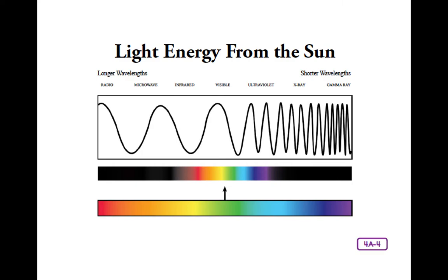"Let me finish explaining and it might make more sense," continued Samuel. "We need light to be able to see. Light from the sun travels to earth. Most of it is invisible to us unless we have equipment like x-ray machines. The visible light shines on objects in the world around us. Some of the light reflects off objects and into our eyes. Then, parts of our eyes receive that information and communicate with our brain. The brain figures out what colors we are seeing."